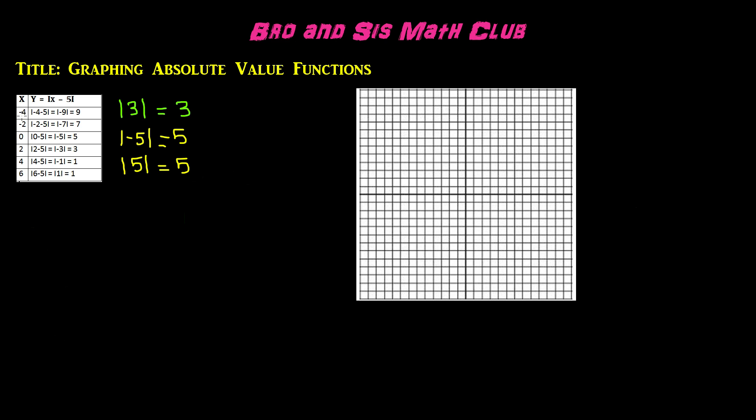Here we have a chart that has listed x values of the coordinates of an absolute value function. We know that the x values are negative 4, negative 2, 0, 2, 4, and 6. For the y values, we've been given a function which is y equals the absolute value of x minus 5.